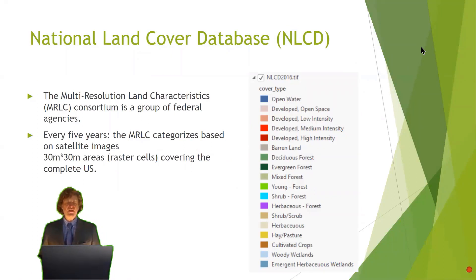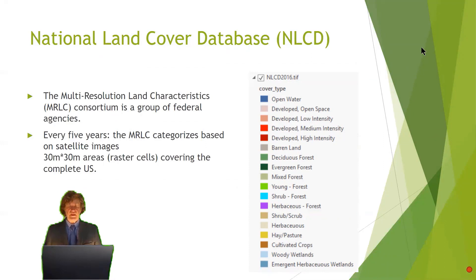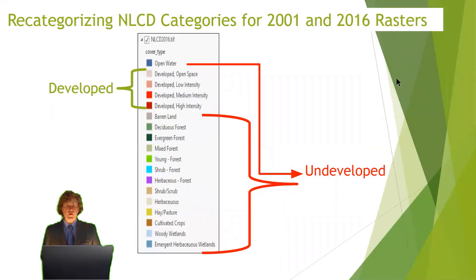We got our data from the National Land Cover Database, which is updated every five years. For our research area, for each of our 30 by 30 meter cells, we have about 20 categories, which you can see here on the right. We used ArcGIS Pro to recategorize these into developed — which was four of the original categories — and the rest was categorized as undeveloped, giving us a total of two different classes: developed or undeveloped.